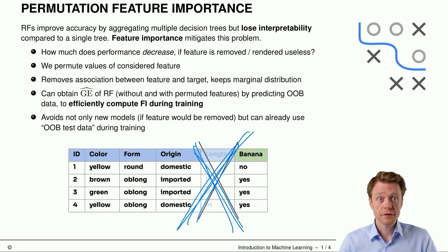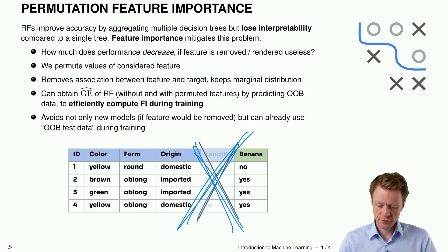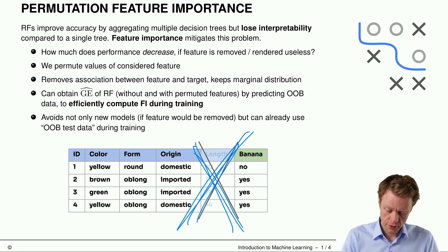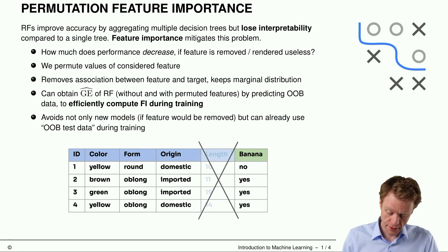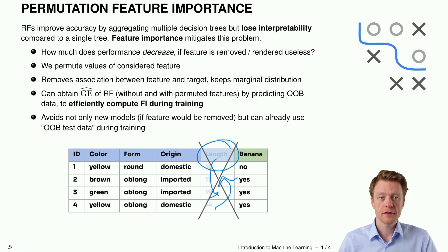The goal is to remove the associations between this feature and the target variable, but to retain the marginal distribution of this feature 'length'. So what we do is randomly permute the values of this column, which keeps the marginal distribution as it was before.